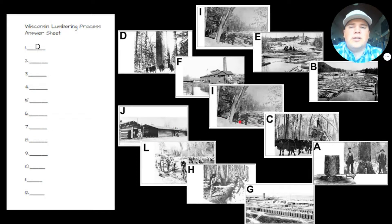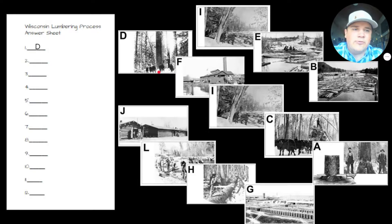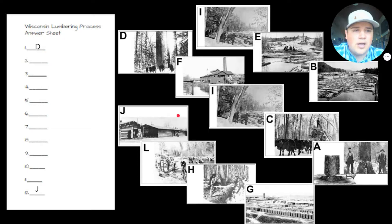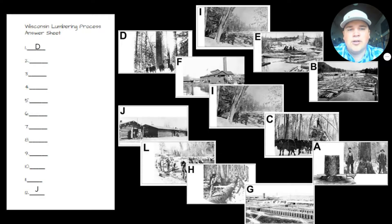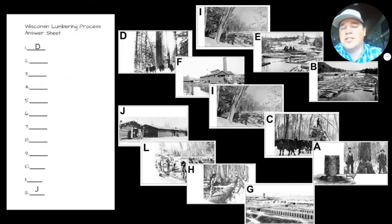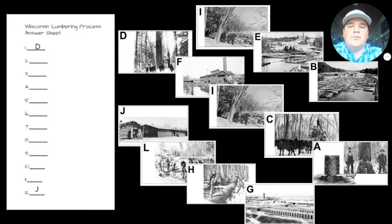The first answer is picture letter D. This picture has a tree standing in the middle of the woods with a bunch of lumberjacks standing around it. That's going to be the first step — that's where all the trees start off, in the middle of the woods. The last step, number 12, is letter J. Picture J is a complete log cabin that they built out of this wood that they processed. So we have to fill out all of the letters in between. Note that number one does not start with letter A, so it's not alphabetical — they're all jumbled up, so you have to put them in the correct order next to the numbered steps on the answer sheet.